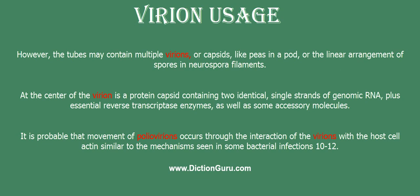At the center of the varian is a protein capsid containing two identical single strands of genomic RNA, plus essential reverse transcriptase enzymes, as well as some accessory molecules.